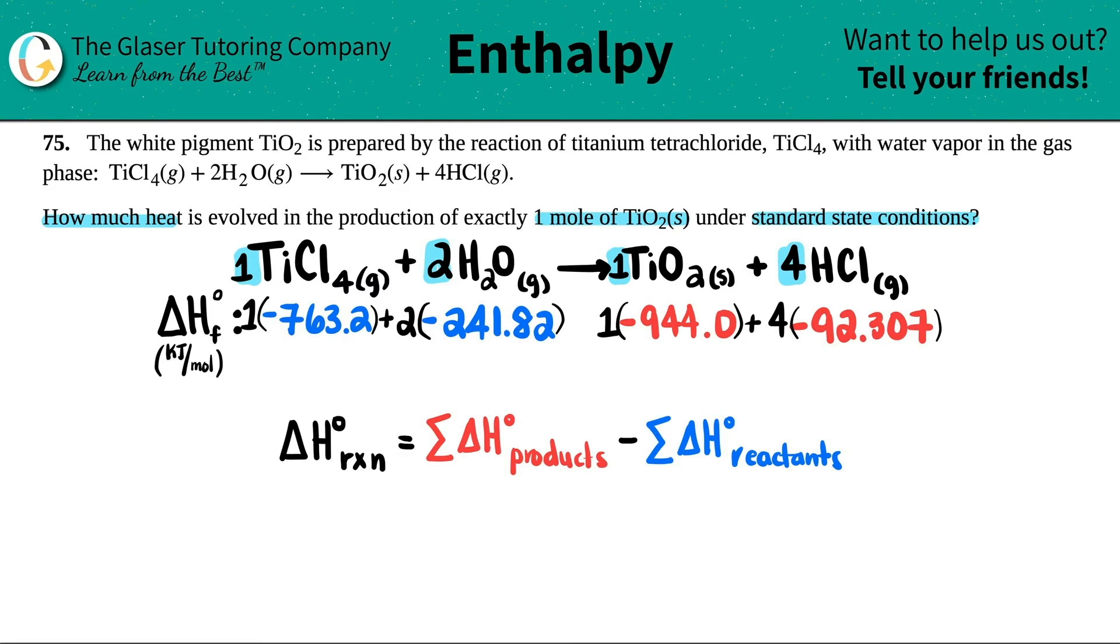So let's see. Negative 763.2 plus two times negative 1,246.84. And now for the product side, negative 944 plus four times negative 92.307. I get negative 1,313.228. Beautiful.